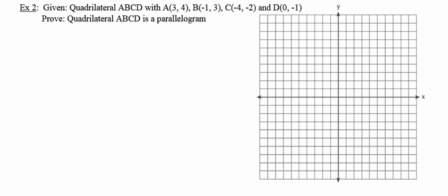The first thing I'm going to do is plot this quadrilateral — there's vertex A, there's vertex B. Let me grab my straight edge and connect its vertices. What's nice about having a quadrilateral on the coordinate plane is that I can use slope, midpoint, and distance formulas to prove any one of the five items in the box.